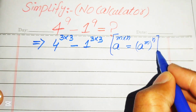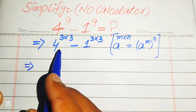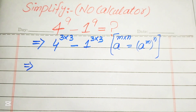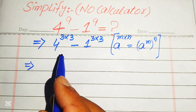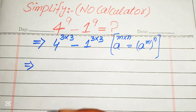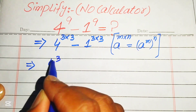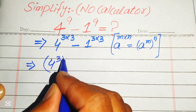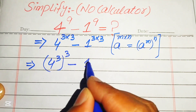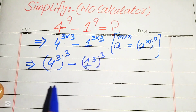According to this exponent law, we rewrite this expression in this form. We move the inner 3 inside and write 4 cubed, its whole cubed, minus 1 cubed, its whole cubed.